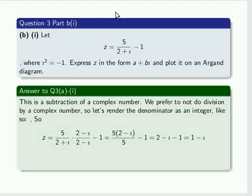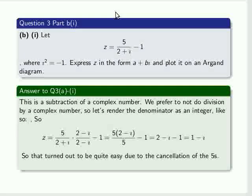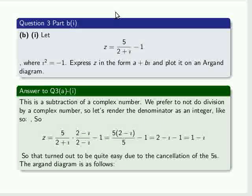so that simplifies to 2 minus i minus 1, which equals 1 minus i. So that turned out to be quite easy because of the cancellation of the 5s. So 1 minus i is our answer.